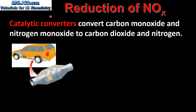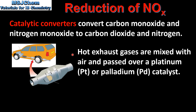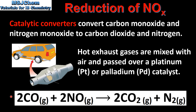Next we look at the reduction of nitrogen oxides. Catalytic converters convert carbon monoxide and nitrogen monoxide to carbon dioxide and nitrogen. Hot exhaust gases are mixed with air and passed over a platinum or palladium catalyst. Carbon monoxide and nitrogen monoxide react with air in the presence of a catalyst to form carbon dioxide and nitrogen, reducing emissions of nitrogen monoxide.